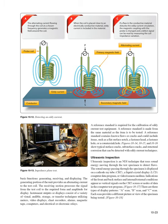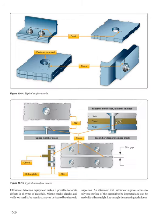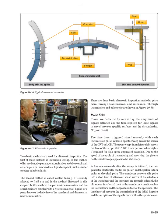Ultrasonic inspection is an NDI technique that uses sound energy moving through the test specimen to detect flaws. The sound energy passing through the specimen is displayed on a cathode ray tube (CRT), liquid crystal display (LCD), computer data program, or video/camera medium. There are three types of display patterns: A-scan, E-scan, and C-scan, each providing a different view of the specimen being tested. Ultrasonic detection equipment makes it possible to locate defects in all types of materials, and requires access to only one surface of the material. Two basic methods are used: immersion testing, where the part and search unit are completely immersed in a liquid couplant; and contact testing, readily adapted to field use, where the part and search unit are coupled with a viscous material or paste.